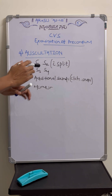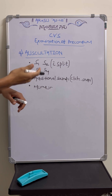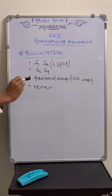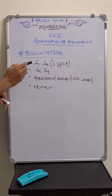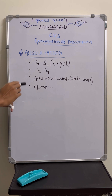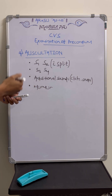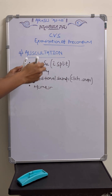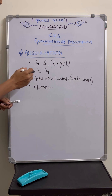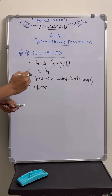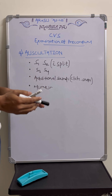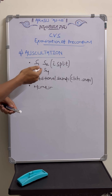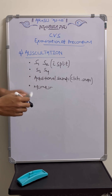At the end is auscultation. You know the areas of the precordium: apical area, tricuspid area, pulmonary area, and aortic area. In each area, auscultate first for S1 and S2. At mitral and tricuspid areas focus mainly on S1; in aortic and pulmonary areas focus on S2 and split if audible. At mitral and tricuspid areas also auscultate for S3 and S4 if present, though in stable patients S3 and S4 will usually not be heard.